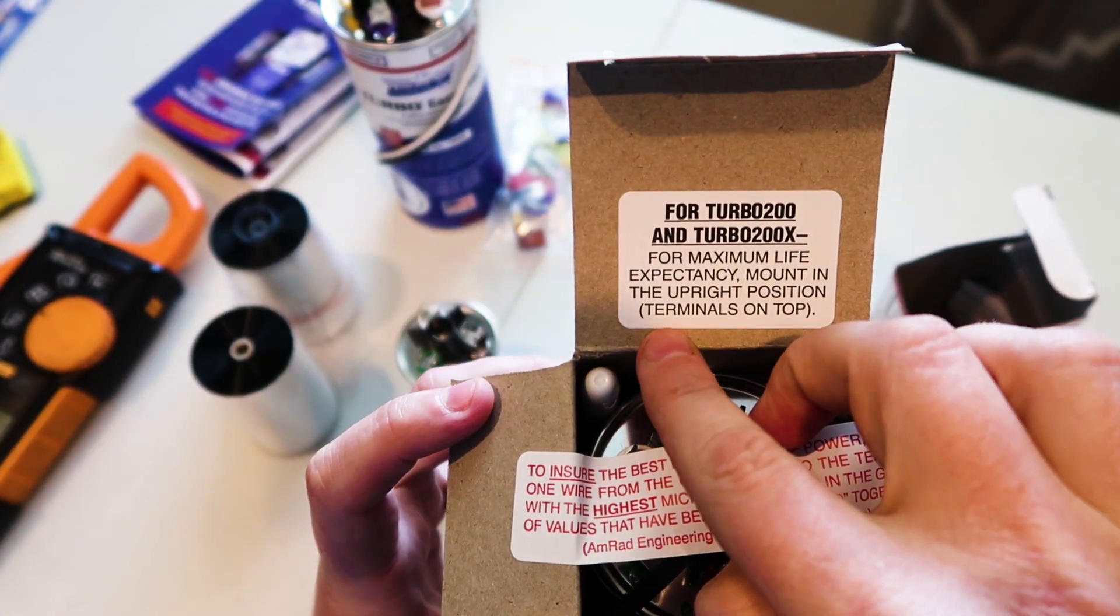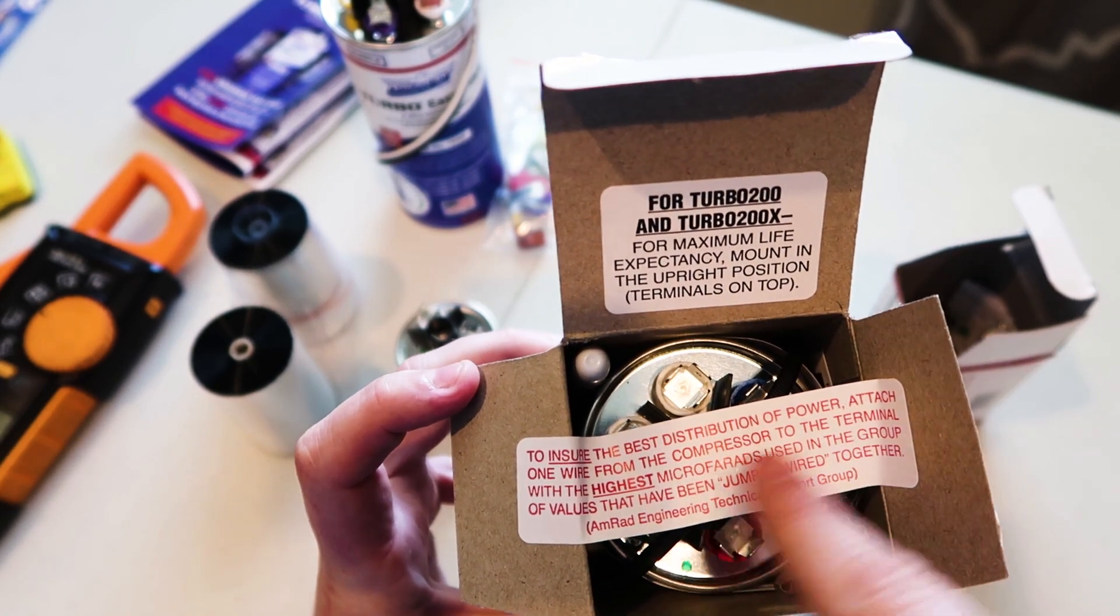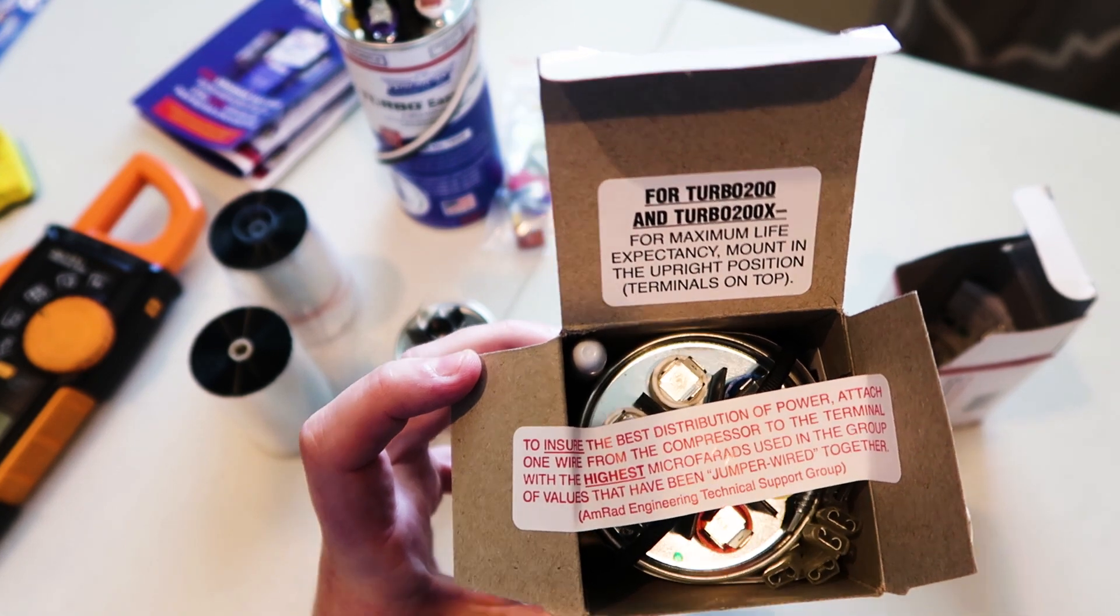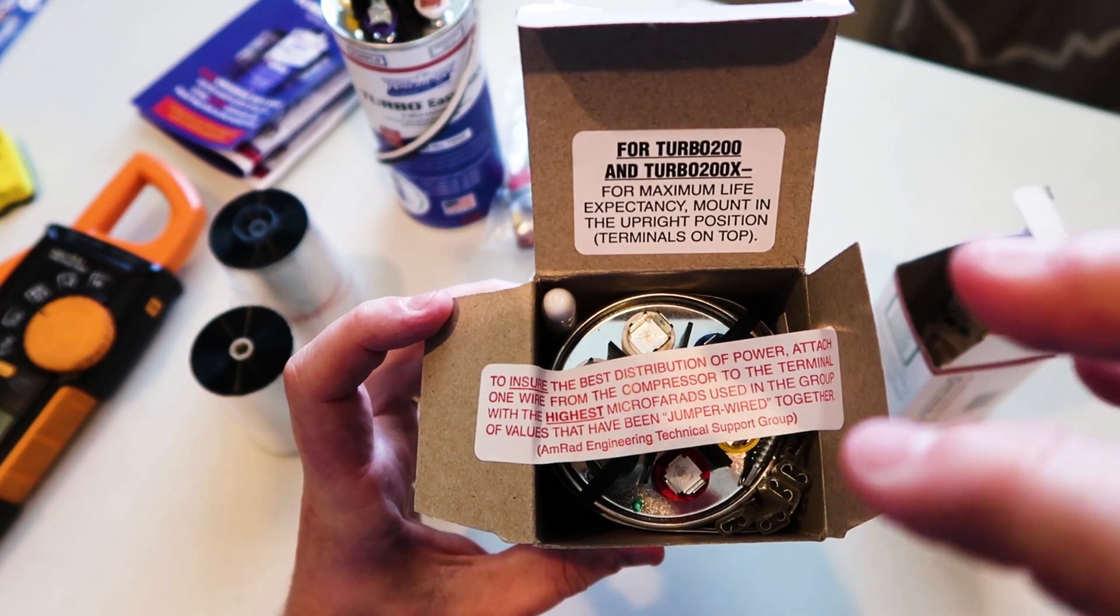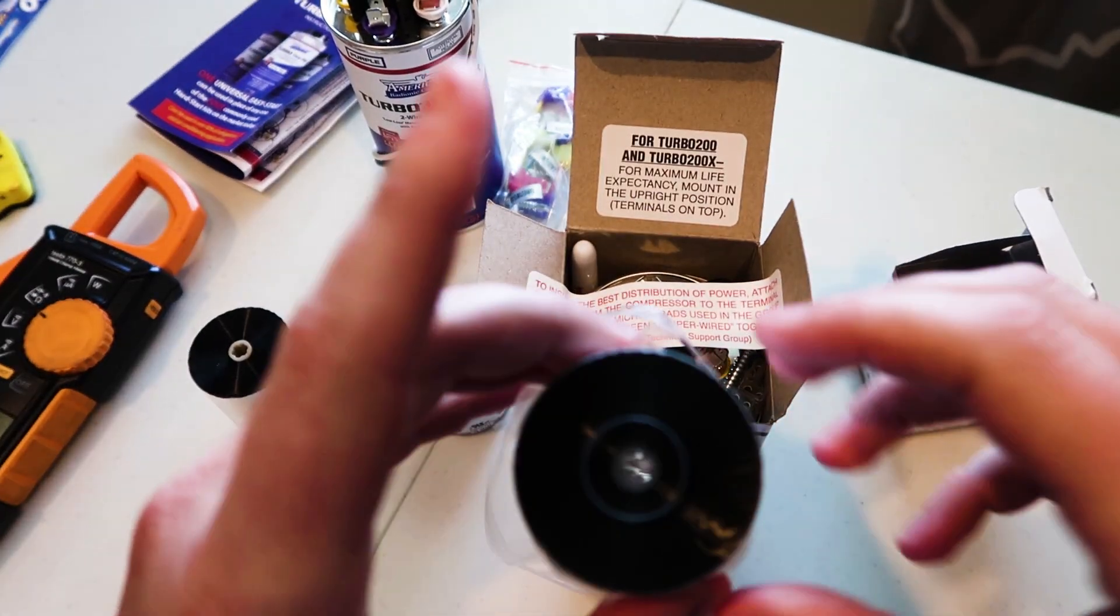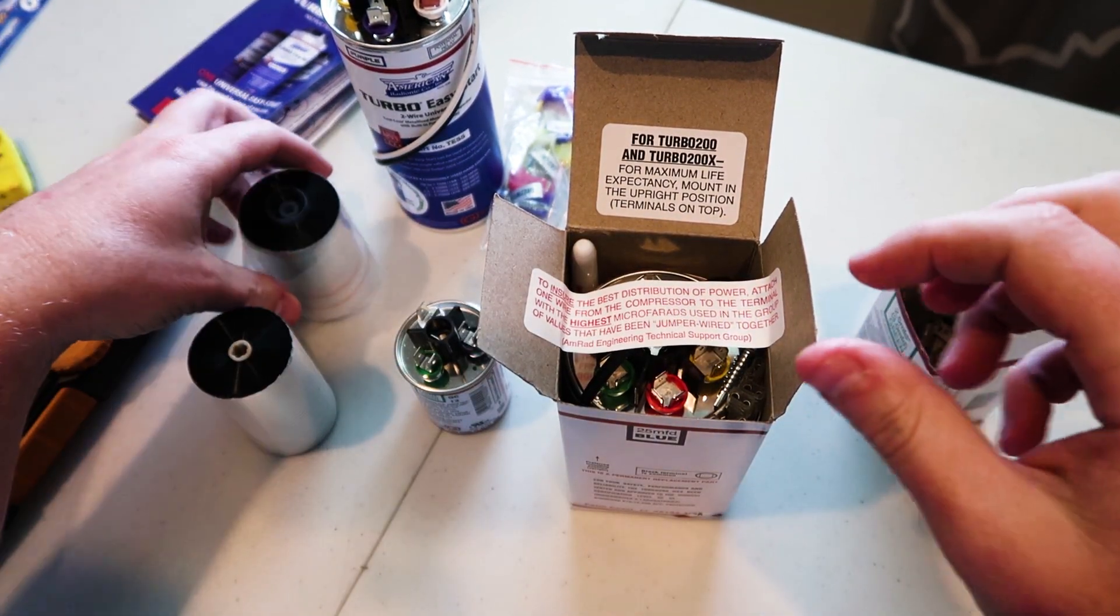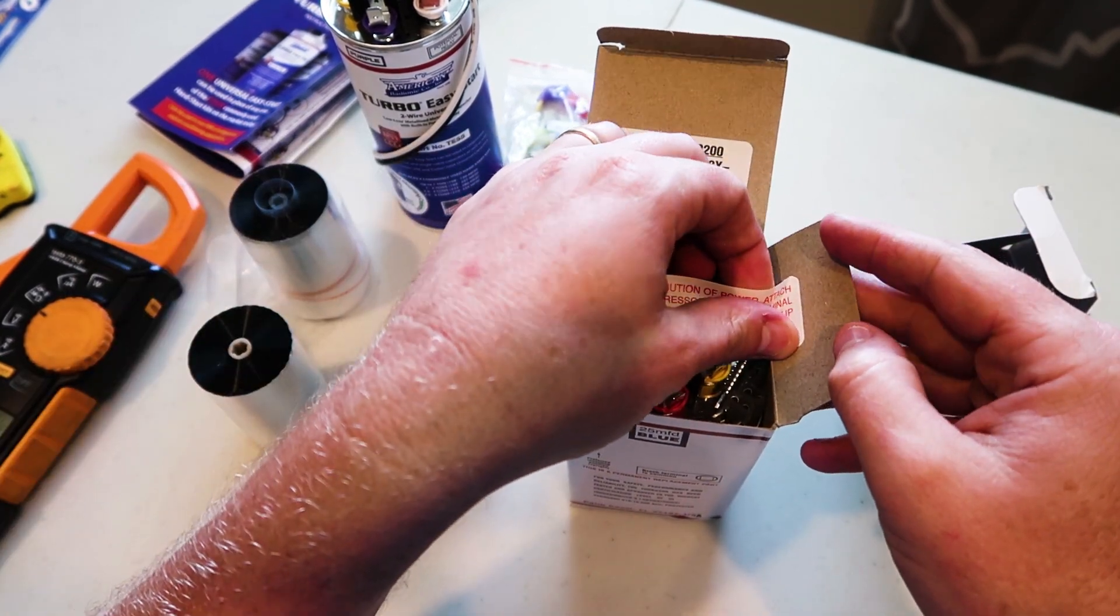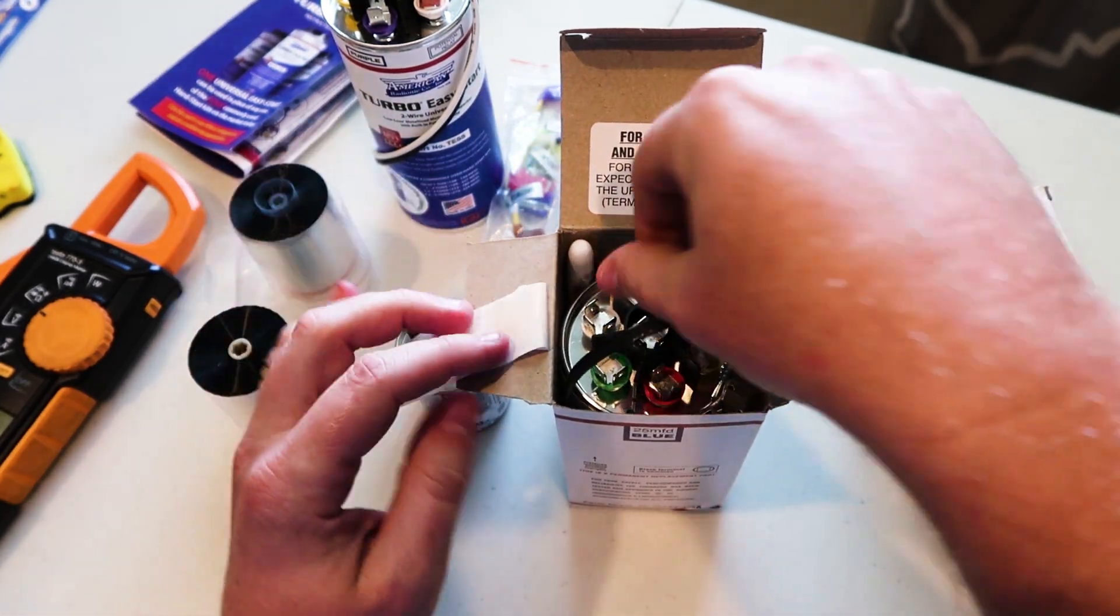So for maximum life expectancy, mount in the upright position with the terminals on top. To ensure the best distribution of power, attach one wire from the compressor to the terminal with the highest microfarads used. The basis of these capacitors and how they work is that you're connecting in multiple windings. If you look in here, there's multiple segments inside this capacitor and you're connecting them together in order to get exactly what you're looking to get from a microfarad standpoint. That's the universal part of these capacitors that makes them so time-saving and so versatile.